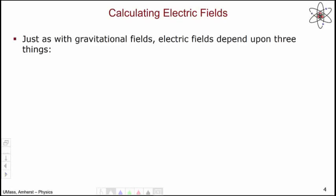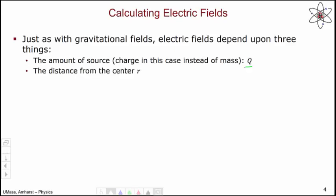But now let's look at that analogy and think about calculating electric fields. Just as with gravitational fields, the strength of the electric field depends upon three things: the amount of source, in this case, the amount of charge generating the electric field. We indicate the amount of charge with the letter Q. Just as with gravitational fields, electric fields decrease with distance from the center of the charge. There's also a constant, this epsilon naught constant, 8.85 times 10 to the minus 12, that we have seen before.